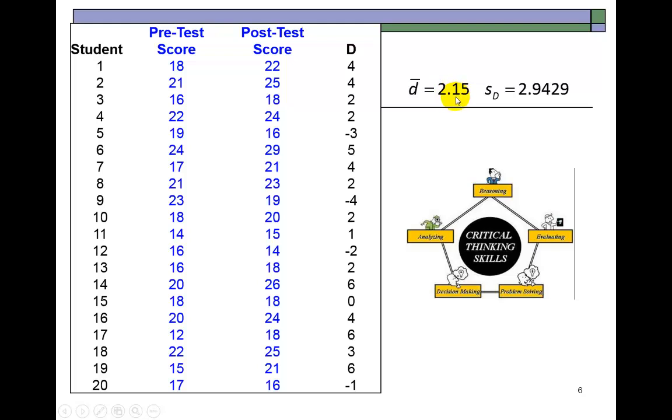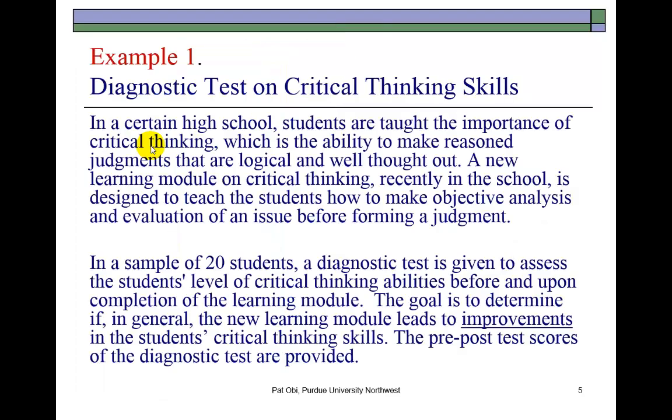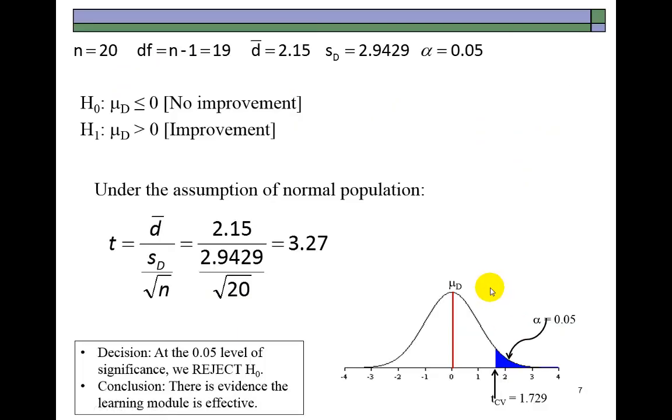But we're going to have to ask the question, is this improvement statistically significant? So, we go ahead and test that. This is going to be a one-tail test. If you go back here to this story, it says that the goal is to determine if, in general, the new learning module leads to improvements in the student's critical thinking skills. So, since this is what we're hoping to conclude on, that goes in the alternative.